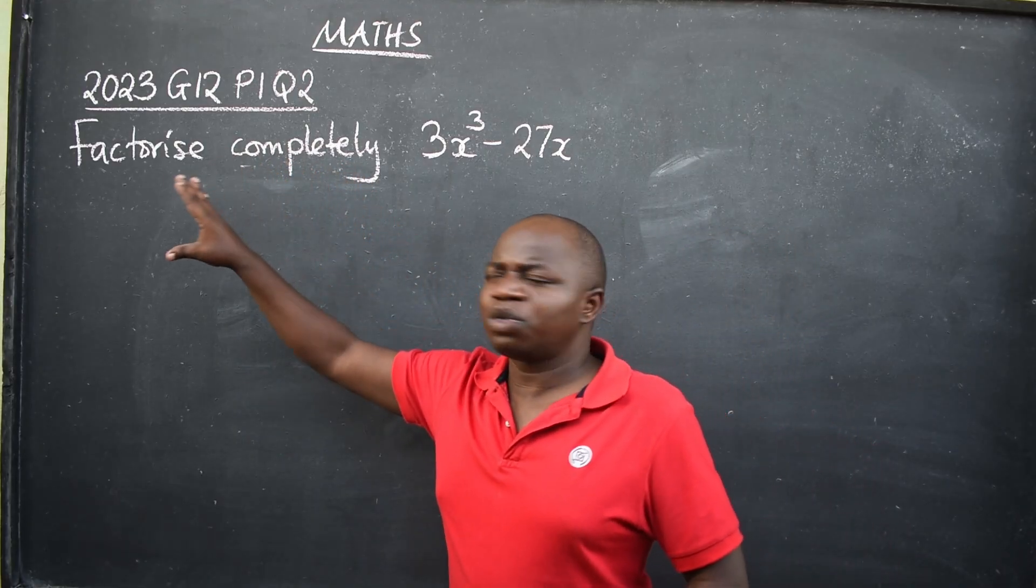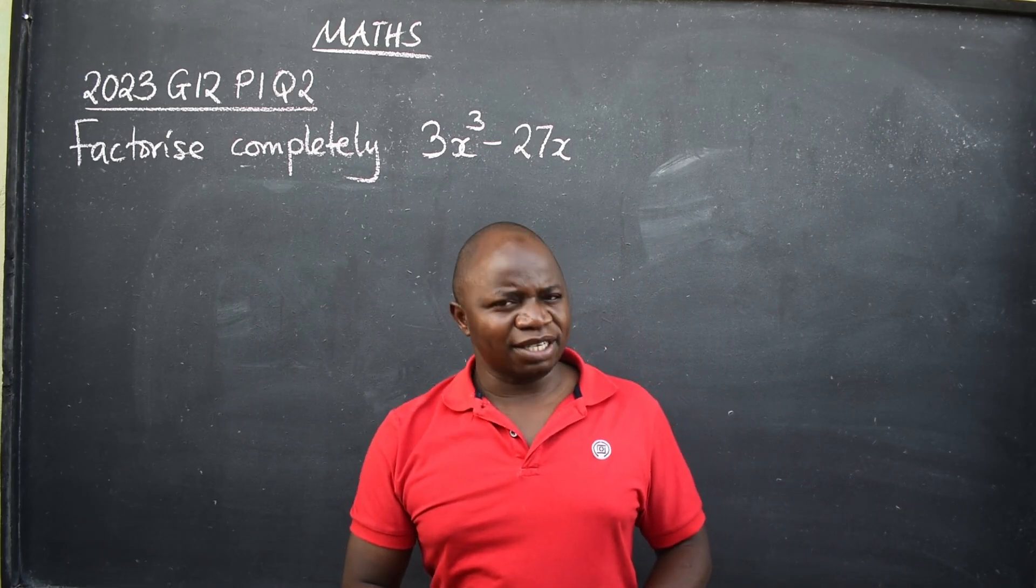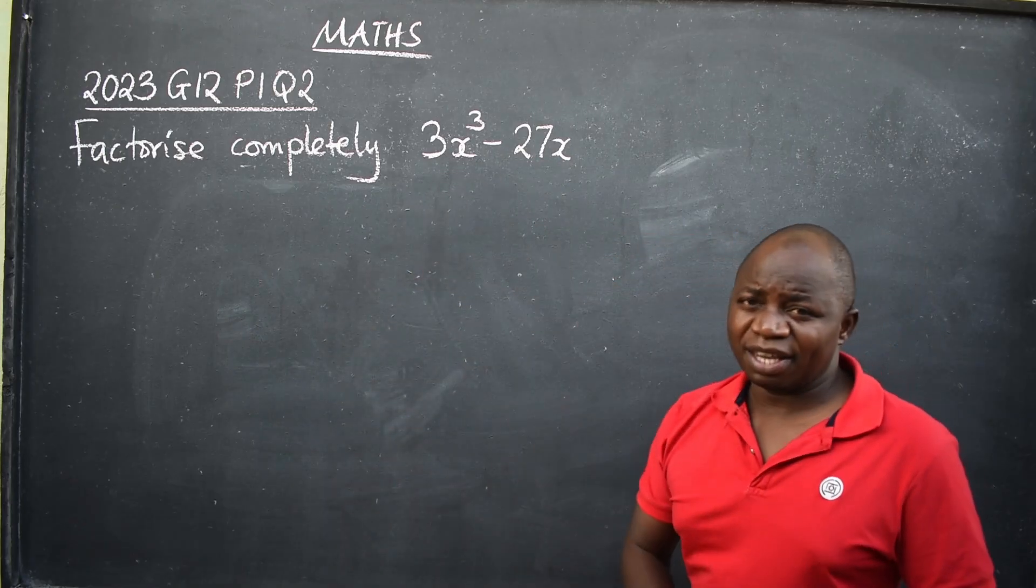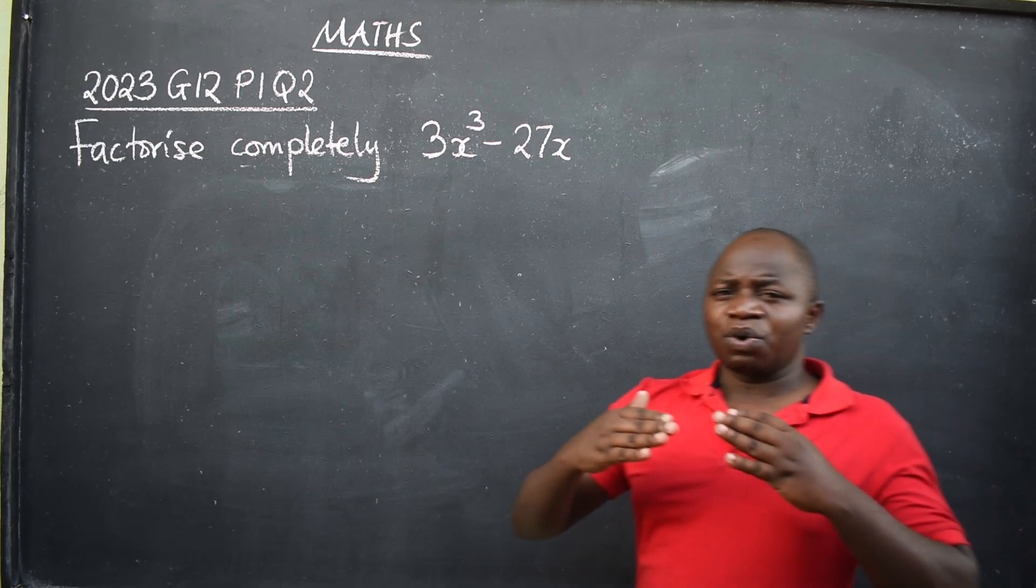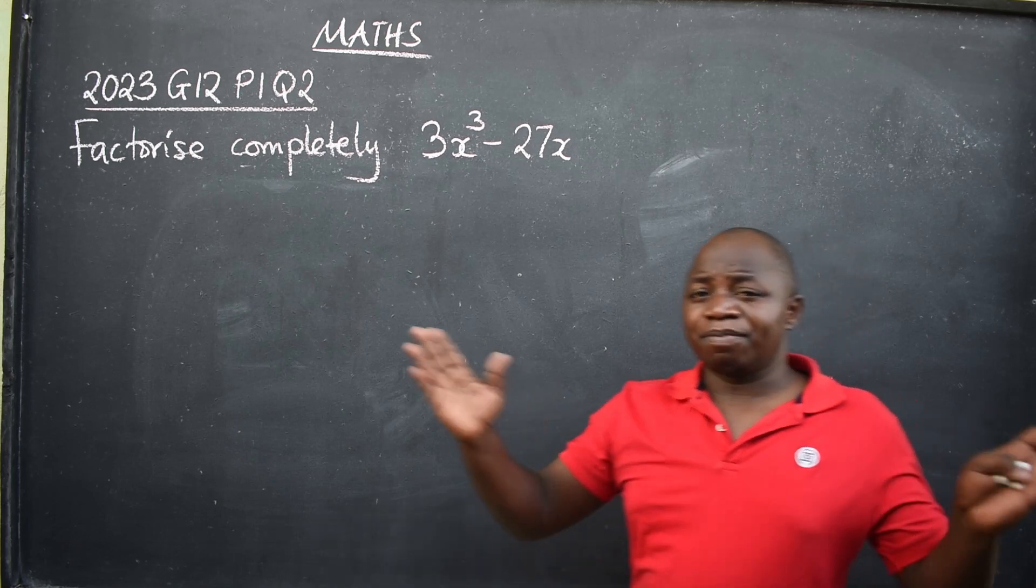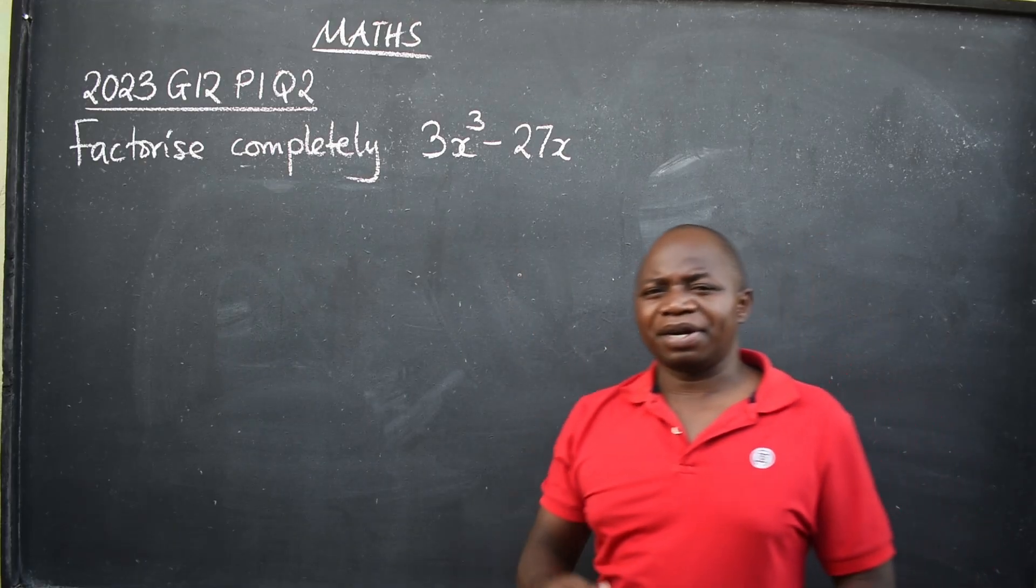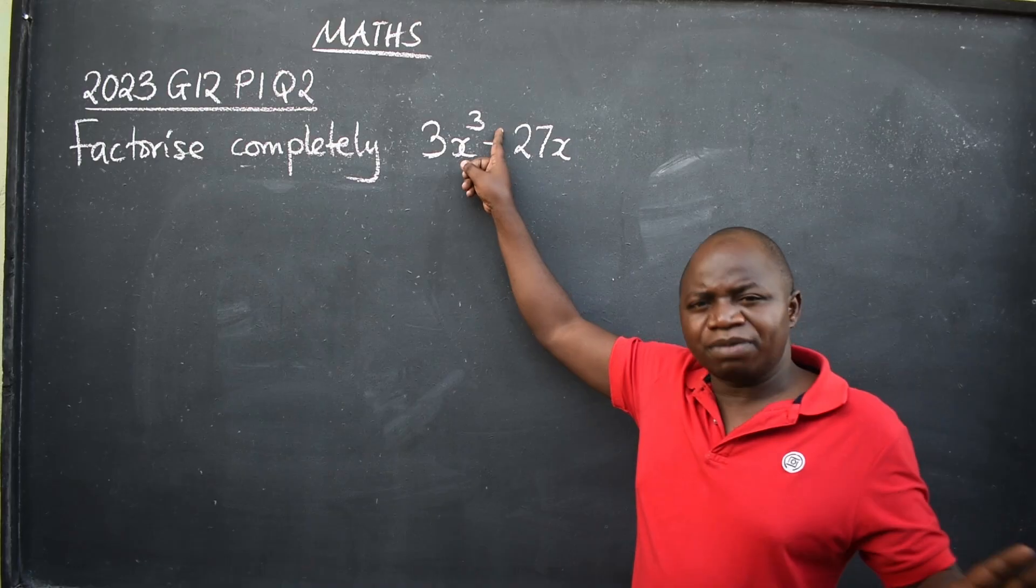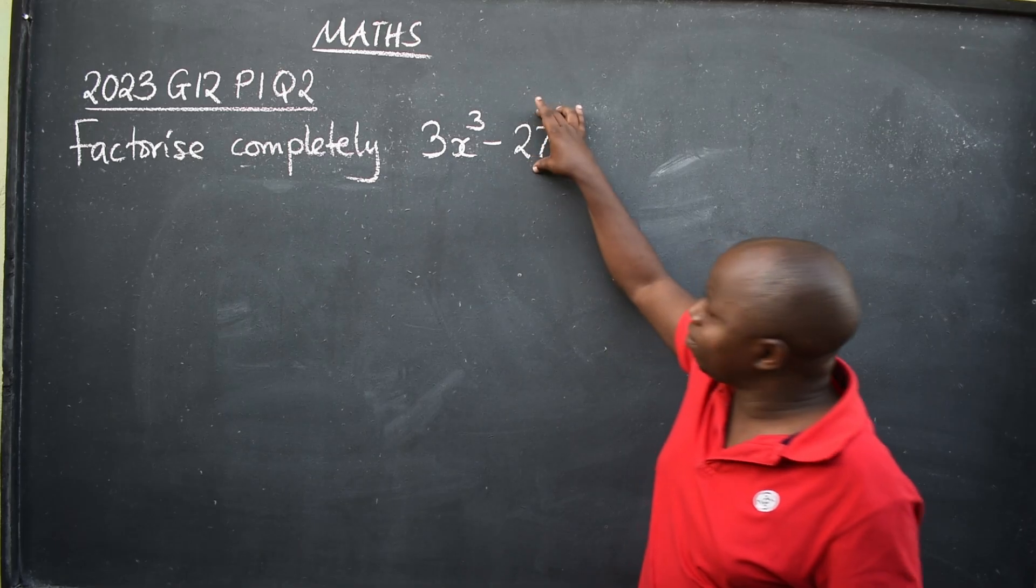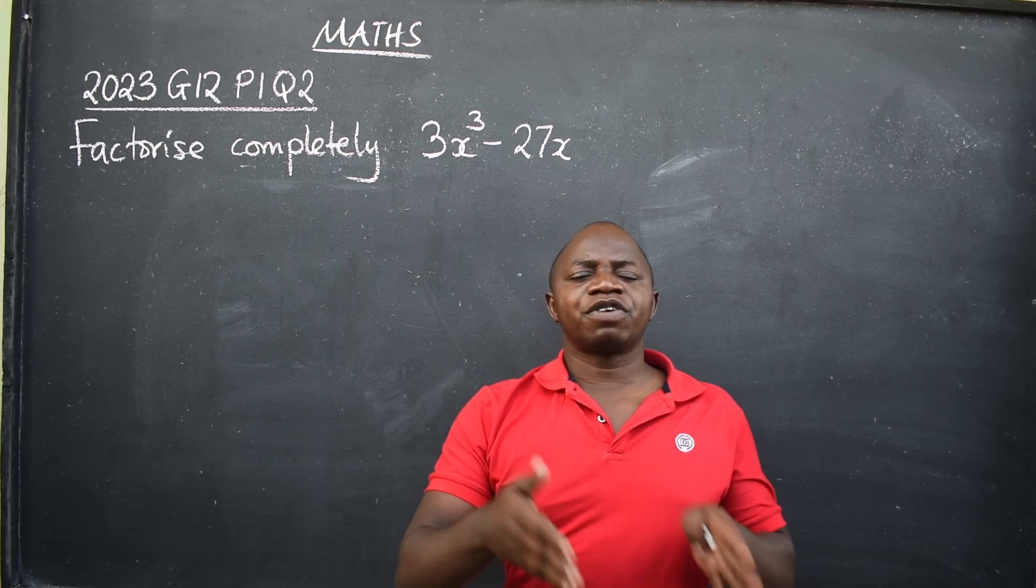You are told to factorize. First, identify the topic. This is algebra under the subtopic factorization. Now, the moment you are told to factorize a given expression, what you need to do is identify the type of factorization you're dealing with. Look at what we've been given here: two terms. When you are given two terms, and the two terms must be separated by a minus, just conclude that you're dealing with the difference of two squares.